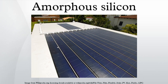Amorphous silicon is the non-crystalline form of silicon used for solar cells and thin film transistors in LCD displays. Used as semiconductor material for thin film silicon solar cells, it is deposited in thin films onto a variety of flexible substrates, such as glass, metal and plastic.